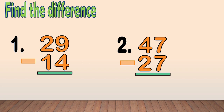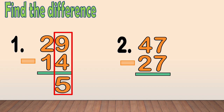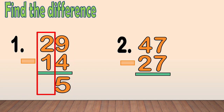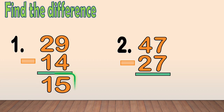Let's answer this. Find the difference. Number 1: 29 minus 14. First, subtract the ones column. 9 minus 4 equals 5. Next, subtract the tens column. 2 minus 1 equals 1. Our final answer is 15.